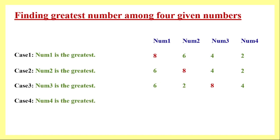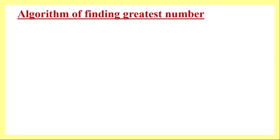Case four is when number four is the greatest. If all other conditions have already failed and we are checking among four numbers, then by default the fourth number has to be the greatest. This logic we will now incorporate through our algorithm as well as our flowchart.